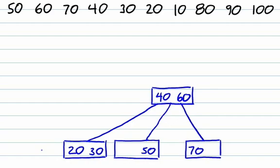For the next value we insert, 10 — once again, 10 is less than 40, so we're going to be inserting it into this node as well. But once again, in this case, there's no longer any room for it. So we're going to have to take the middle value of the three and try to push it up. As we can see, there's not going to be any room for it in the parent, so this is going to require a little bit more work.